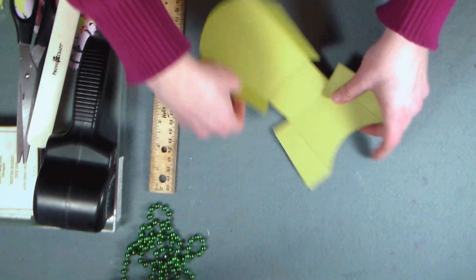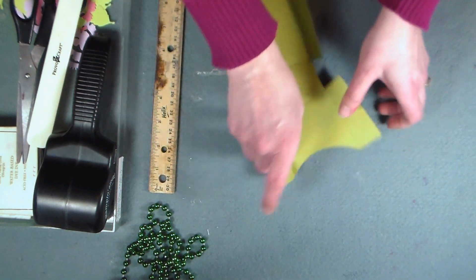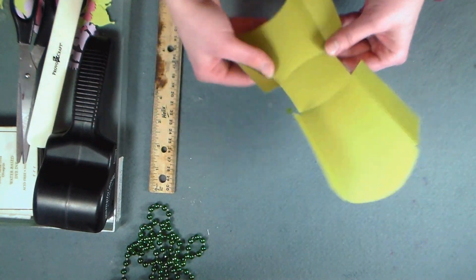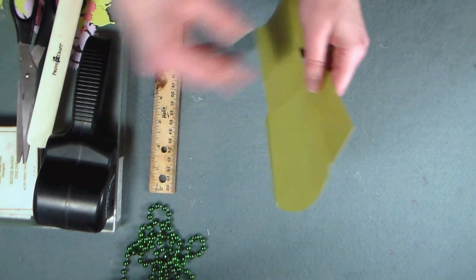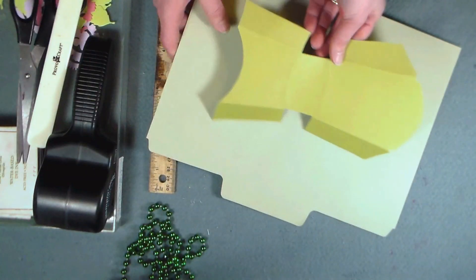After you've scored your lines, just gently fold along the lines to make sure everything looks like it's going to line up well. And then we're going to flip it over and do some stamping on the back side.